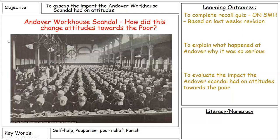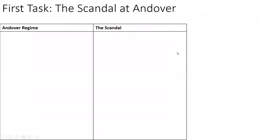We're going to look at what happened at Andover and why it was so serious, the factors that caused it, go through the questions you were given for your lesson, and then use an example essay from one of you to look at the structure of writing. The scandal at Andover: firstly you needed to know about the regime, and then about the scandal itself and how it was brought about.